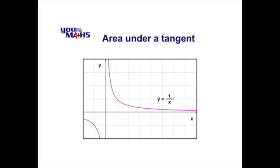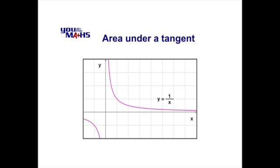In this problem we're trying to find the area bounded by various aspects of features connected with the reciprocal graph, in this case y equals 1 over x. The specific question we can see here: what is the area bound by a tangent to the curve shown, the positive x axis and the positive y axis?